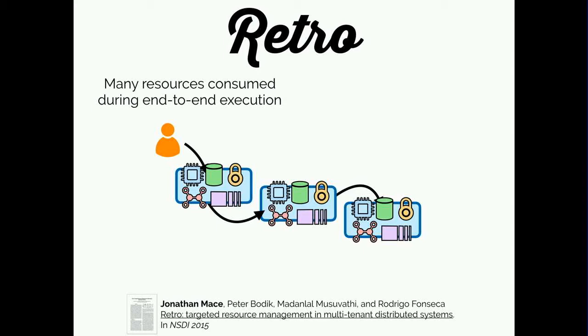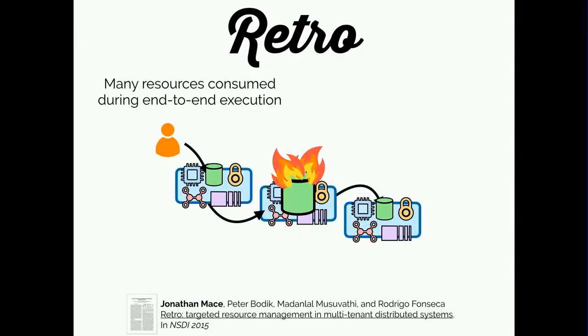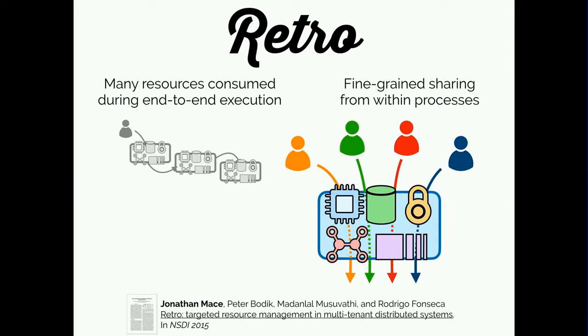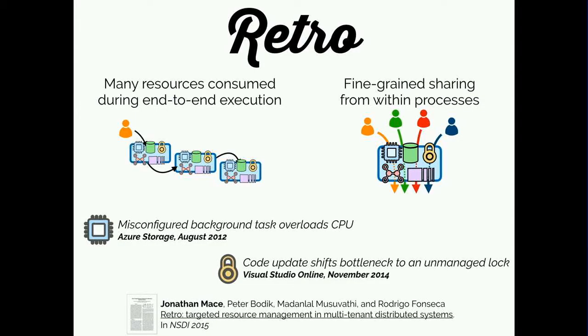Each process visited by an execution expands resources like CPU in order to do work. If any one of these is slow — like a slow disk on an HDFS worker — that's going to impact end-to-end performance. This problem is amplified because within each process, we're handling many concurrent executions, so congestion can occur on application-level resources like locks and queues. Insufficient resource management leads to performance degradation for users and can even cause entire system outages. For example, an aggressive background task in Azure Storage overloaded CPUs and caused a system outage. Similarly, an update to Visual Studio Online shifted a bottleneck to an unmanaged application-level lock, again leading to a system outage. All major cloud providers and internet companies have experienced such outages due to insufficient resource management.